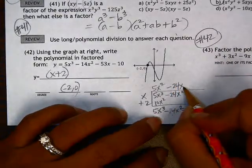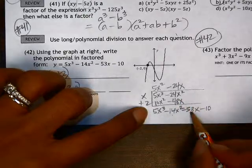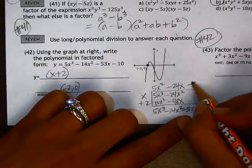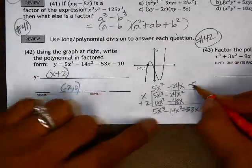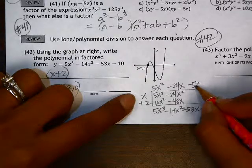This is a negative 24x. This would be negative 48x. I need another negative 5x.